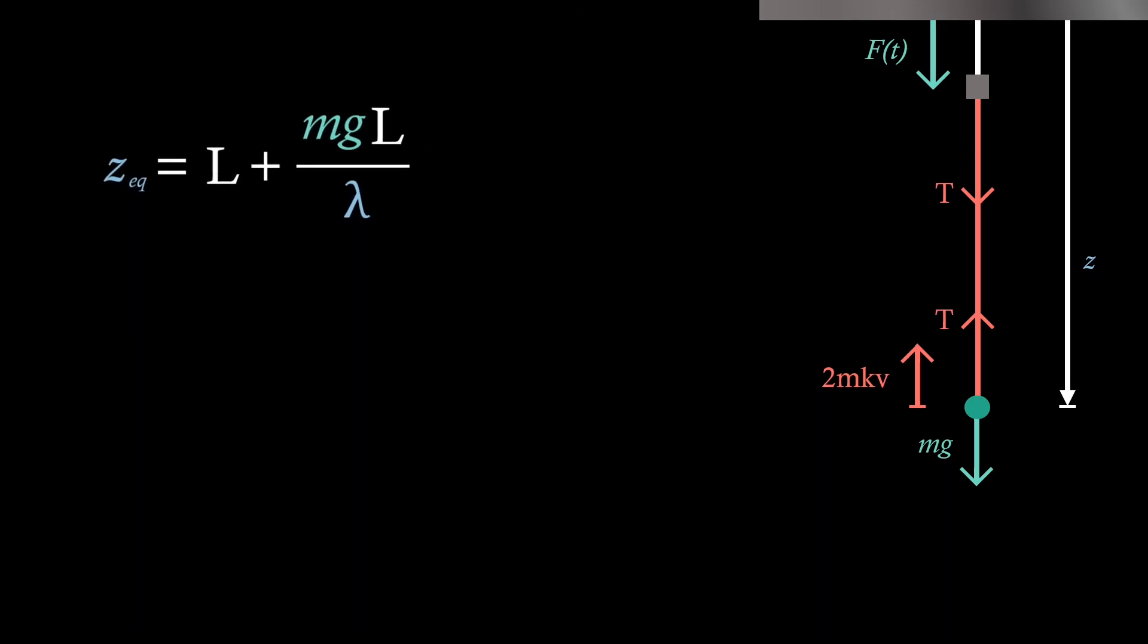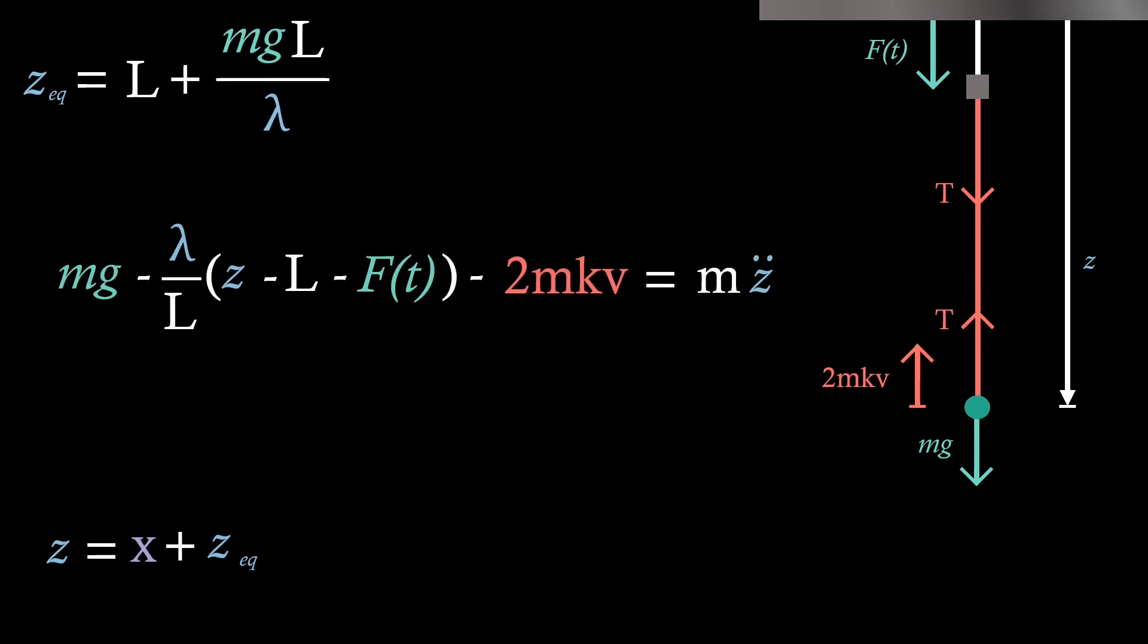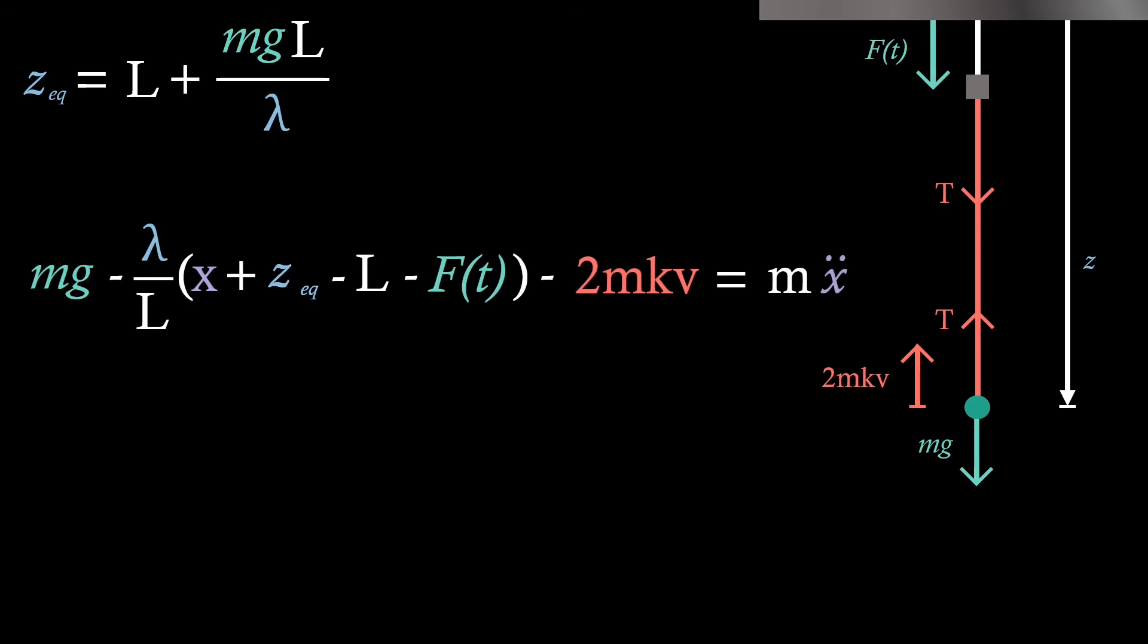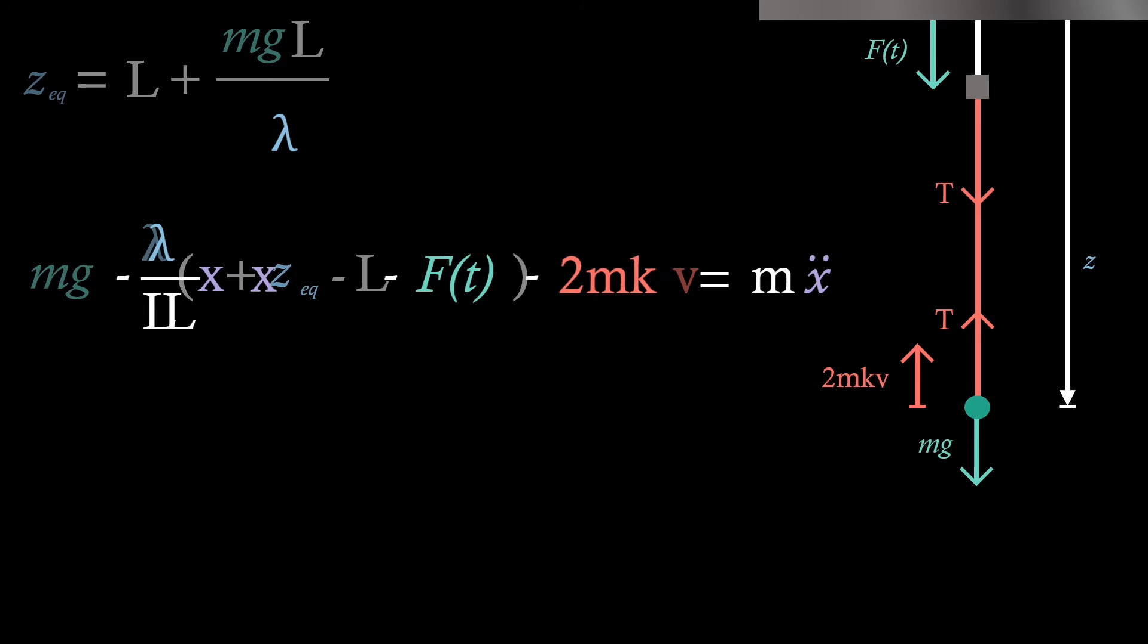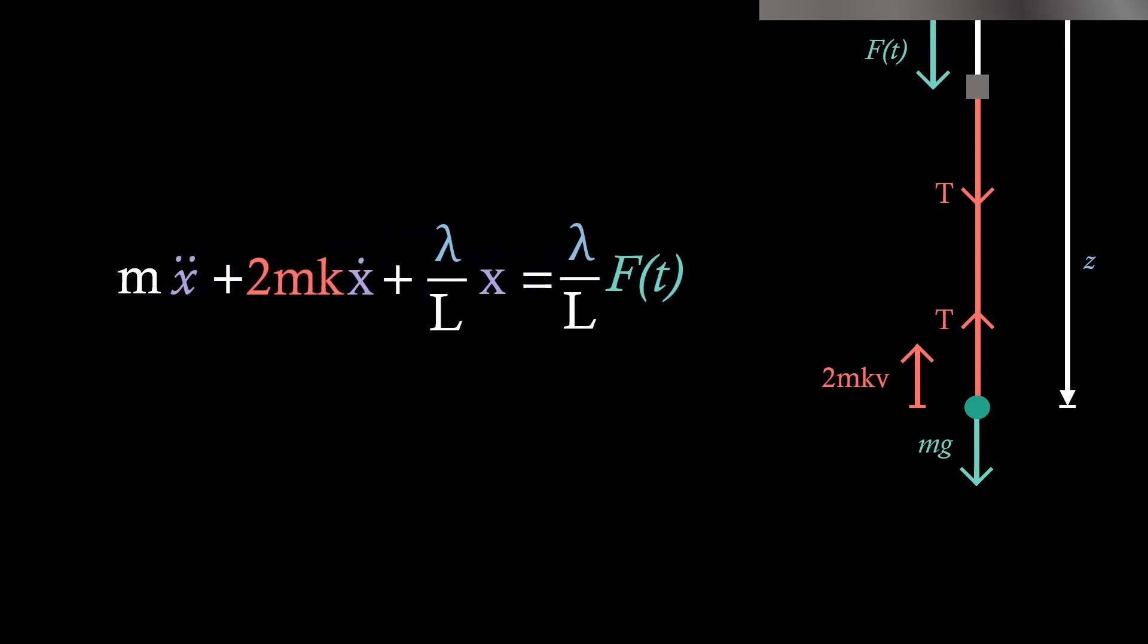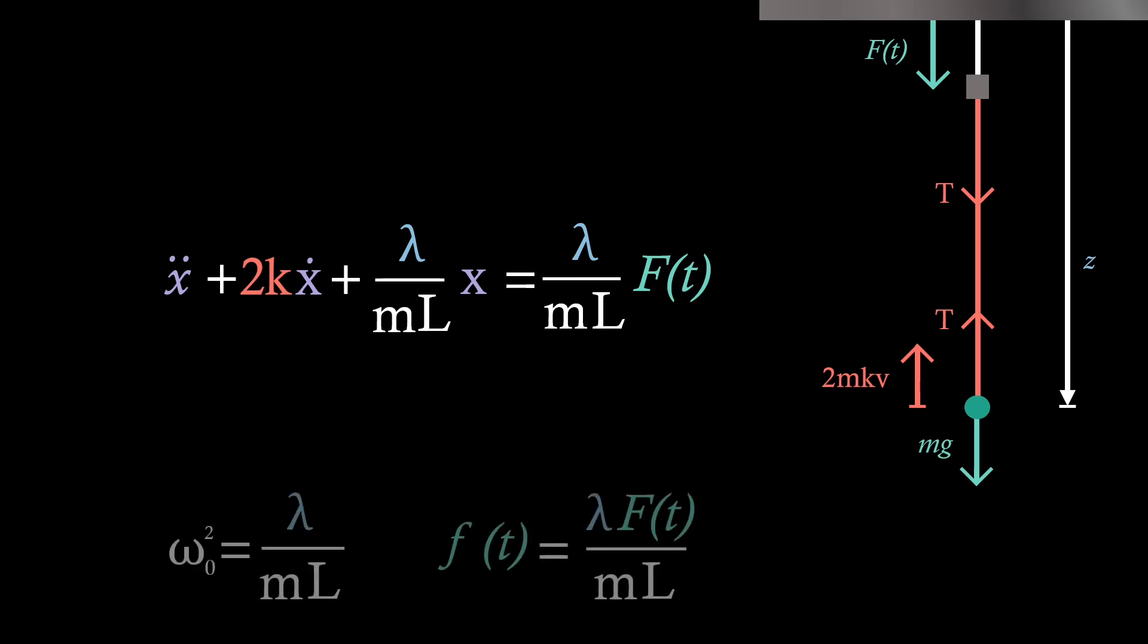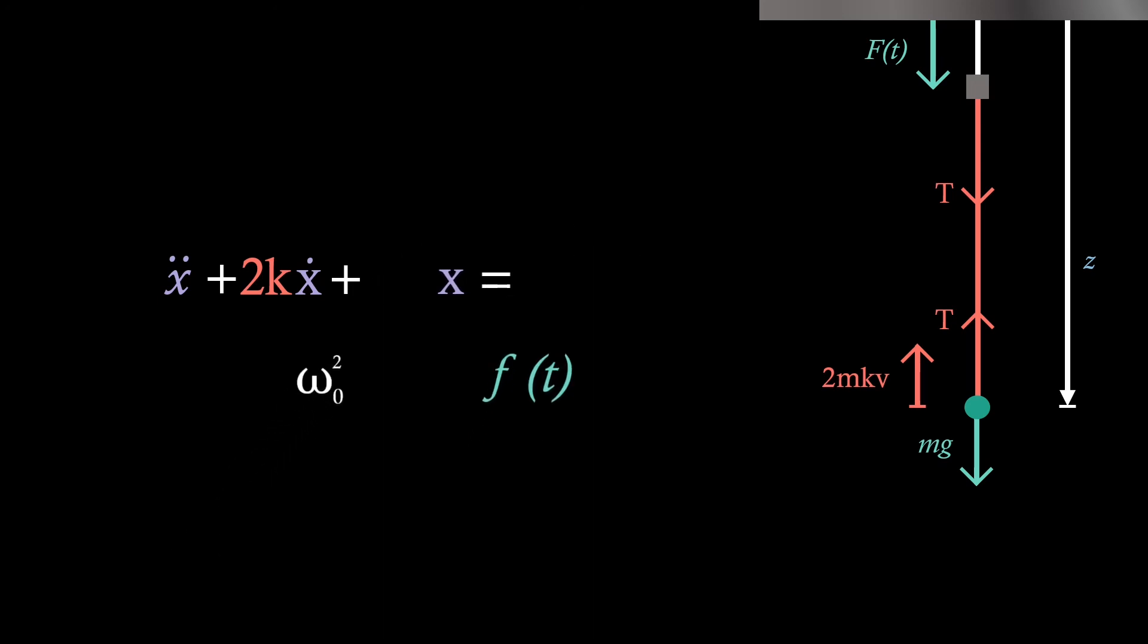So bringing back our general equation, we can start to try and solve for z. Once again, we'll use a smart substitution where z equals x plus zEQ, which we can substitute into our general equation like we did before. Now we can start to reduce this. We'll expand the brackets and reduce some of our terms down. We'll see that we're left with this expression, where we'll just rearrange to get all of our x terms on one side of the equation. Just as we did before, we'll divide through by m to leave us with another ODE. Now we're going to do some simplification. We'll let omega 0 squared equal lambda over mL, and we'll let a lowercase f of t equal lambda f of t over mL. This will just leave us with an expression for forced, damped, simple harmonic motion.